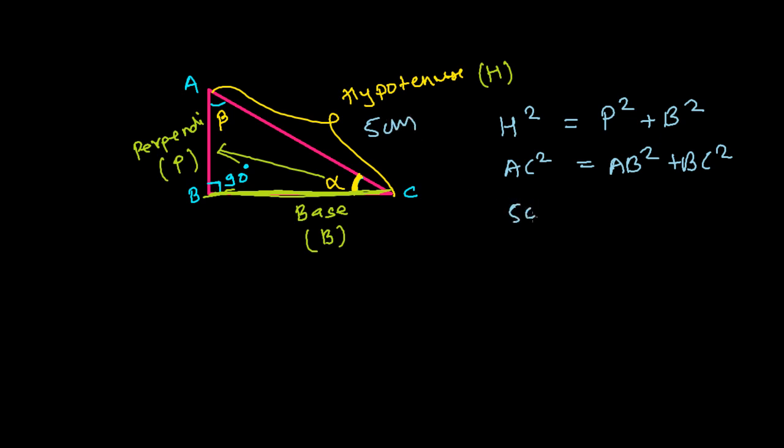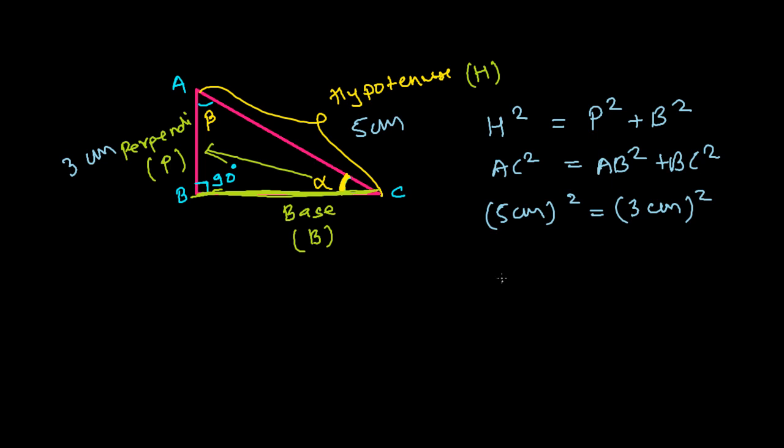For example, let's say this is 5 centimeters, so it will be 5 centimeter square. Let's say AB is 3 centimeters, so it will be 3 centimeter square. And now see here one thing.